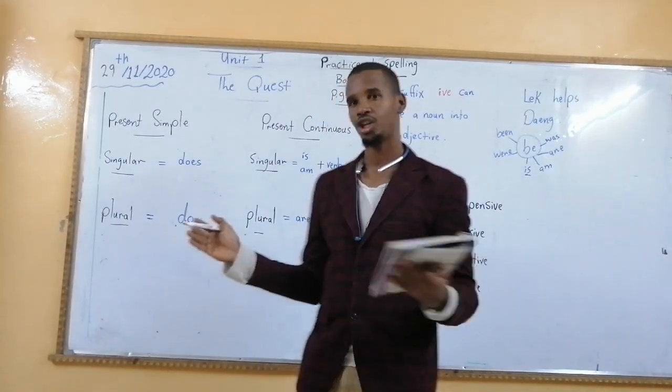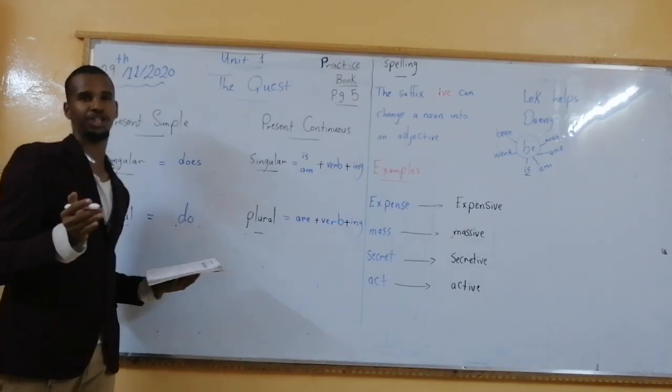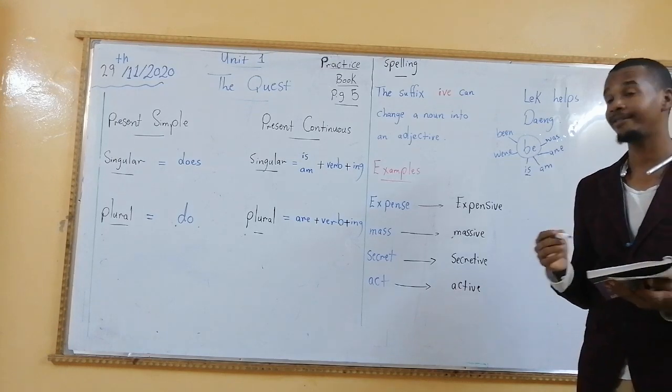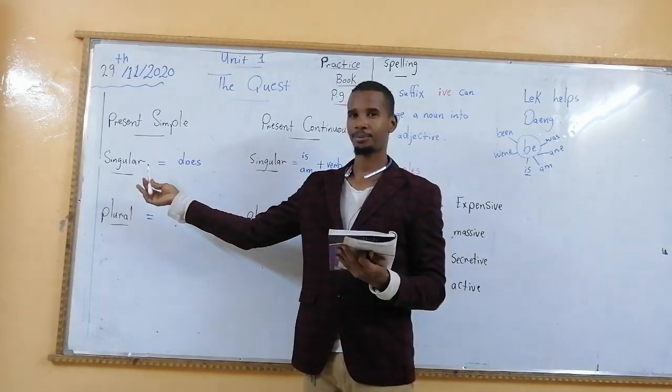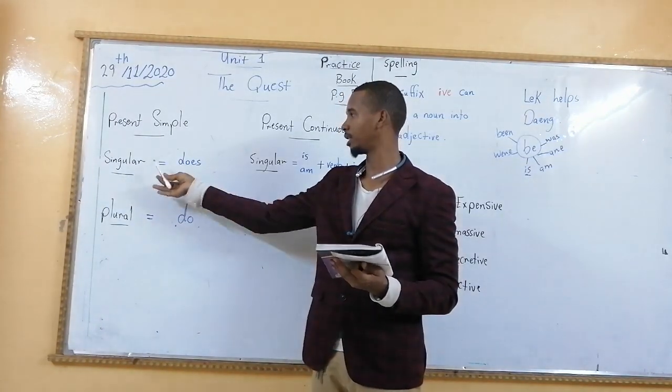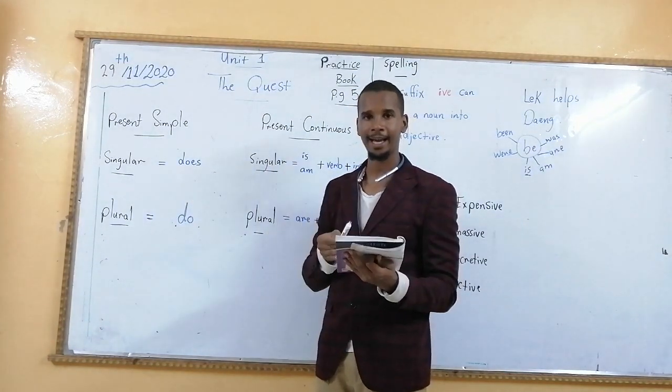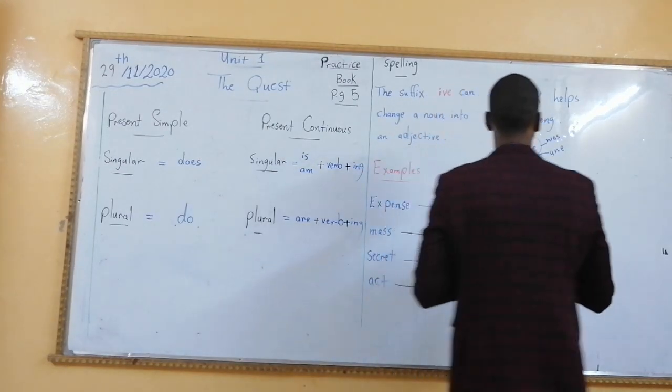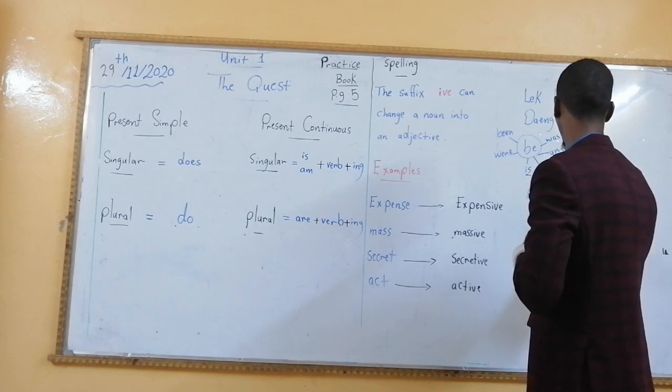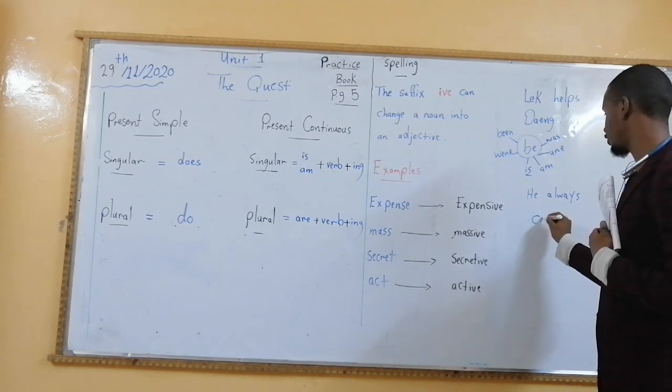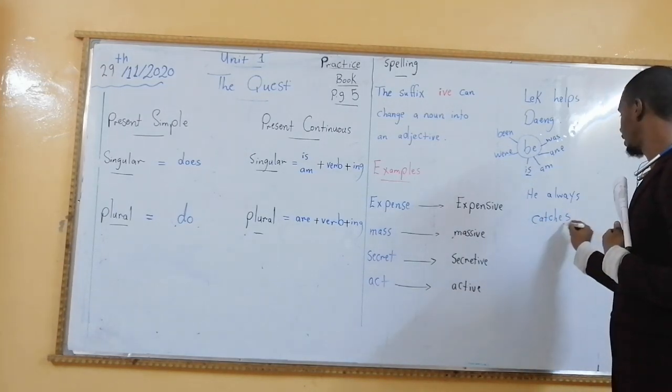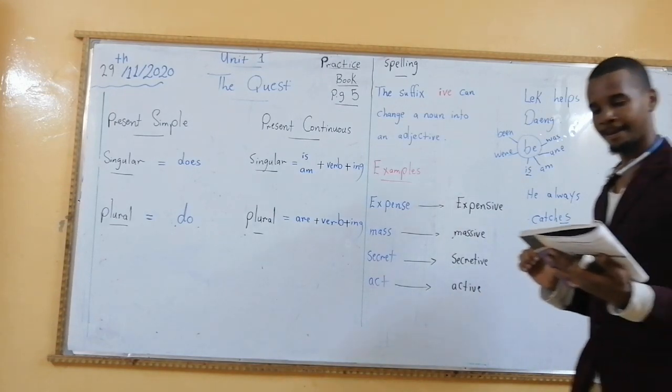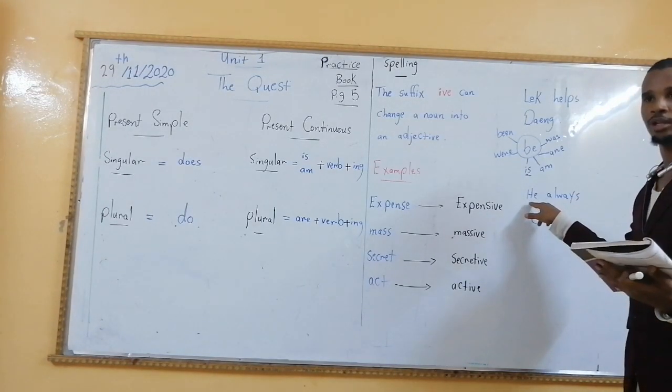He always blank loves a fish. What do we do to fish? Yes of course we catch the fish. So we're going to put catch. Then again we have he. And remember if we have a singular subject pronoun or noun we put s or es to the verb. Singular does. So we have to use es with catch. So it becomes he always catches a lot of fish. We use catch with fish and we put es because we have a pronoun he.